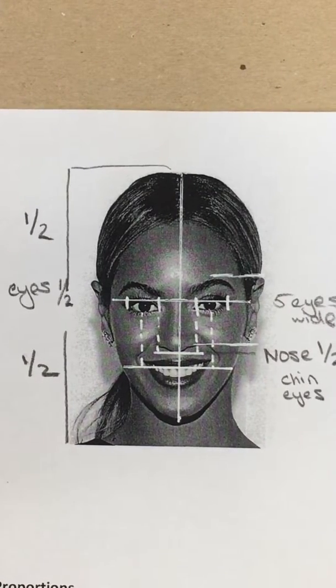When you're drawing proportions of the face, you can put a piece of acetate or tracing paper on top of a photo to see where things line up. You can draw these lines to help you line up your different features.